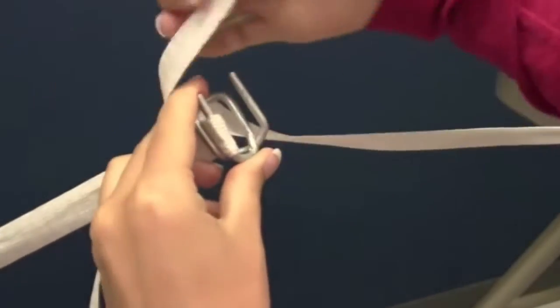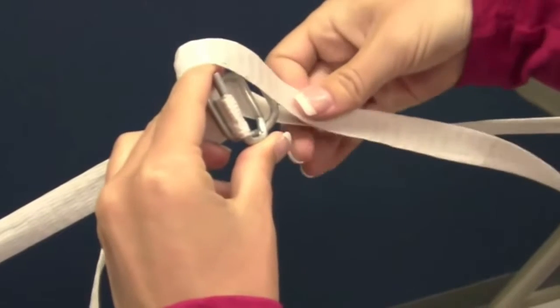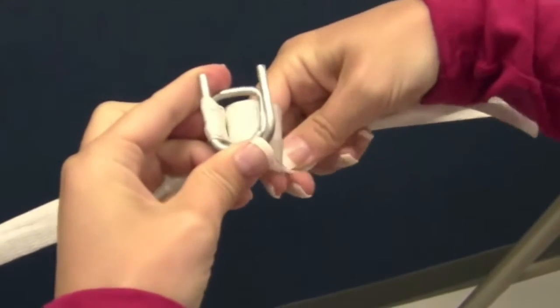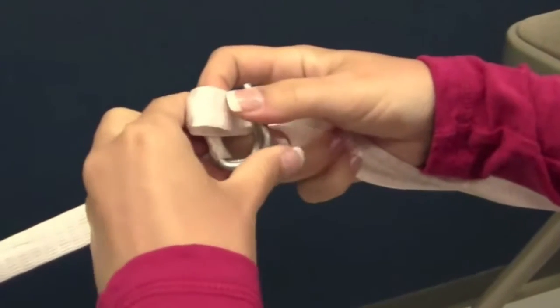You will do the same thing on the other side of your buckle. When your strapping is secured to your buckles, pull the loose ends of your strapping tight for a snug fit.